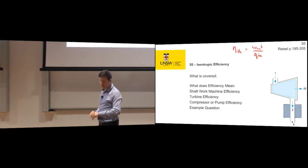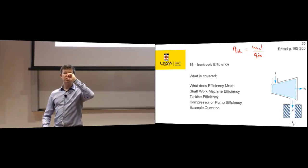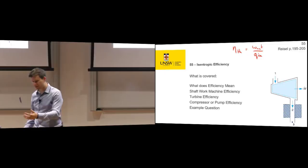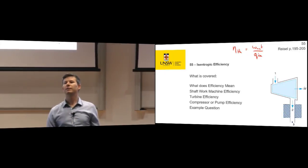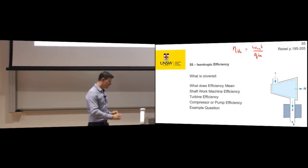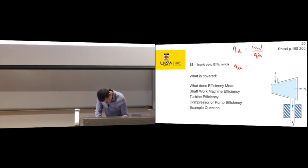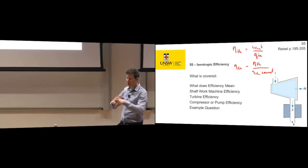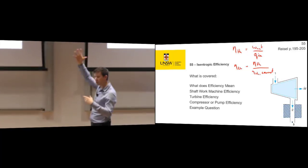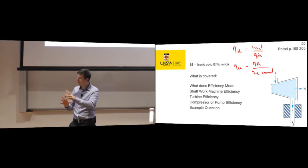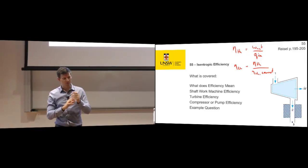That gives you thermal efficiency. You were alluding to a different type of efficiency — second law efficiency. Second law efficiency is the thermal efficiency divided by what the thermal efficiency would have been if it was the Carnot cycle — for the same maximum and minimum temperatures. You can calculate a Carnot efficiency and compare it to your actual thermal efficiency.